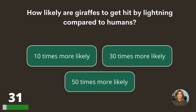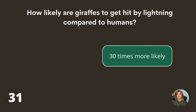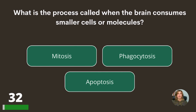Let's move to Science and Nature. How likely are giraffes to get hit by lightning compared to humans — 10 times more likely, 30 times more likely, or 50 times more likely? 30 times more likely. What is the process called when the brain consumes smaller cells or molecules — mitosis, phagocytosis, or apoptosis?